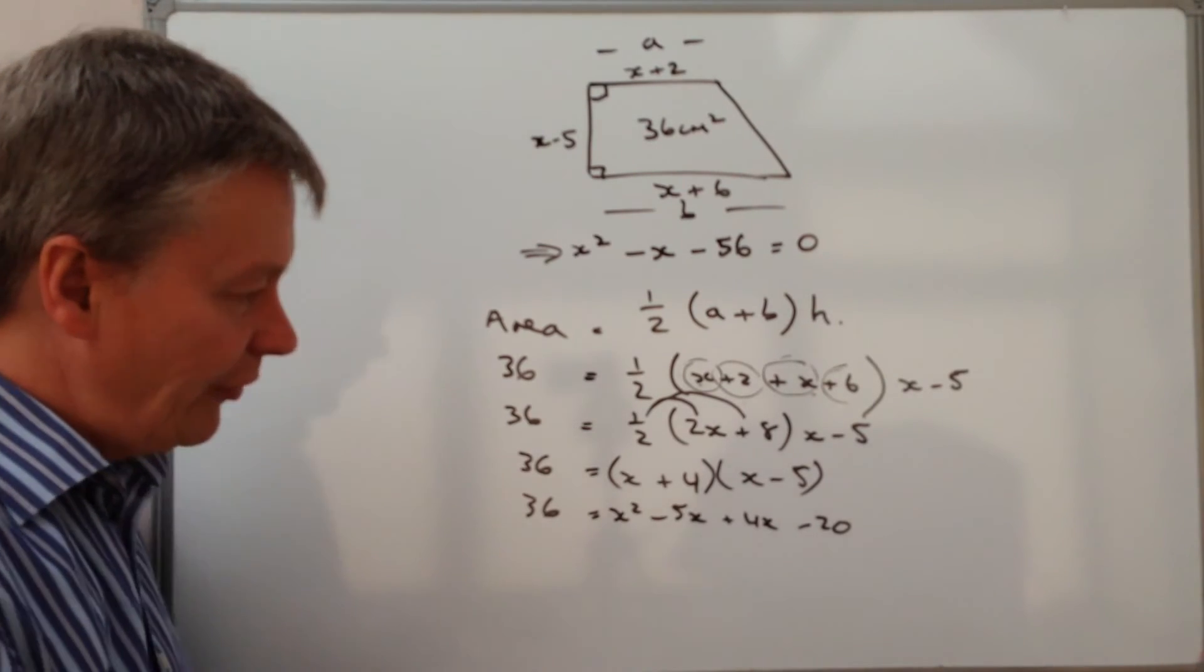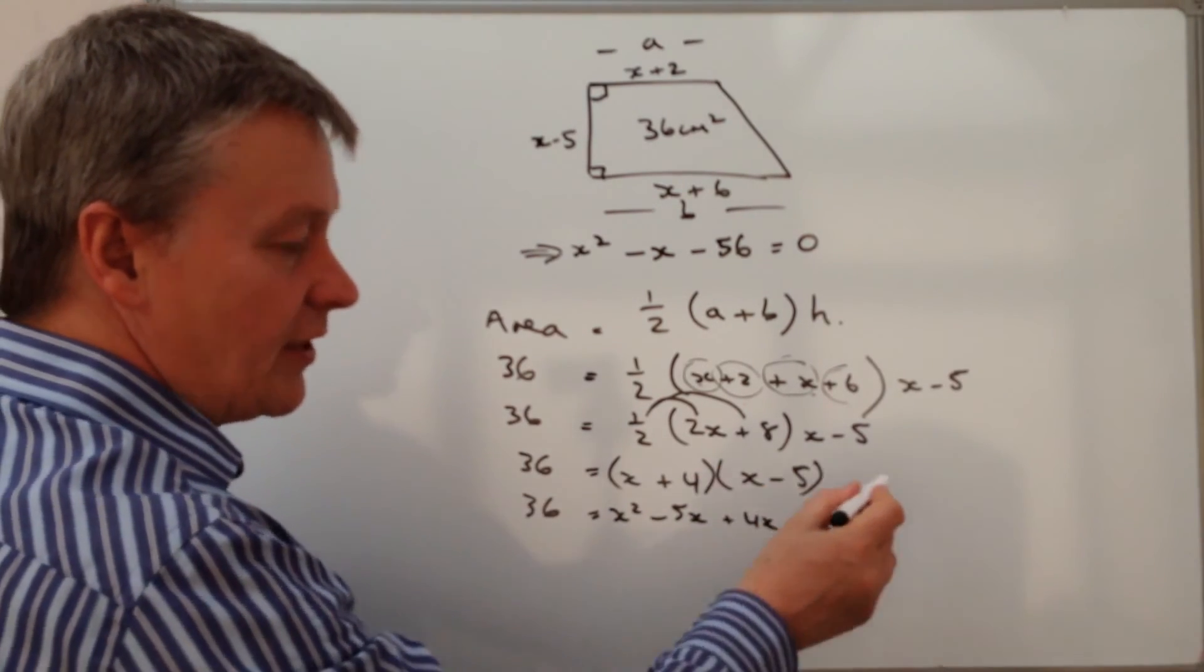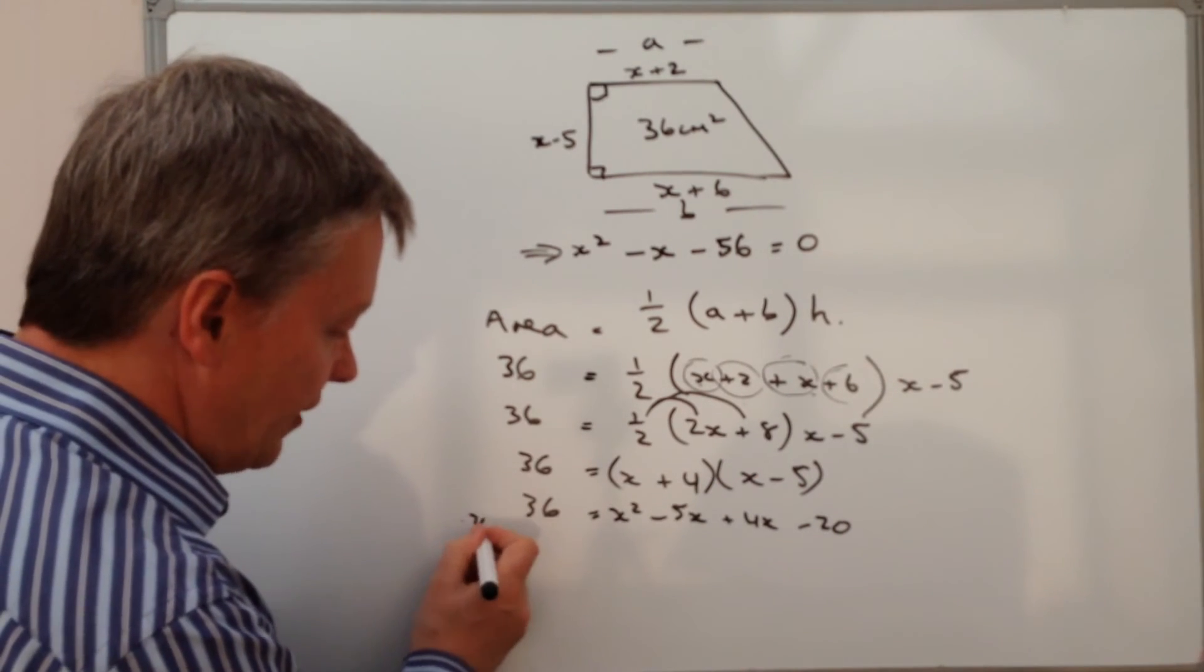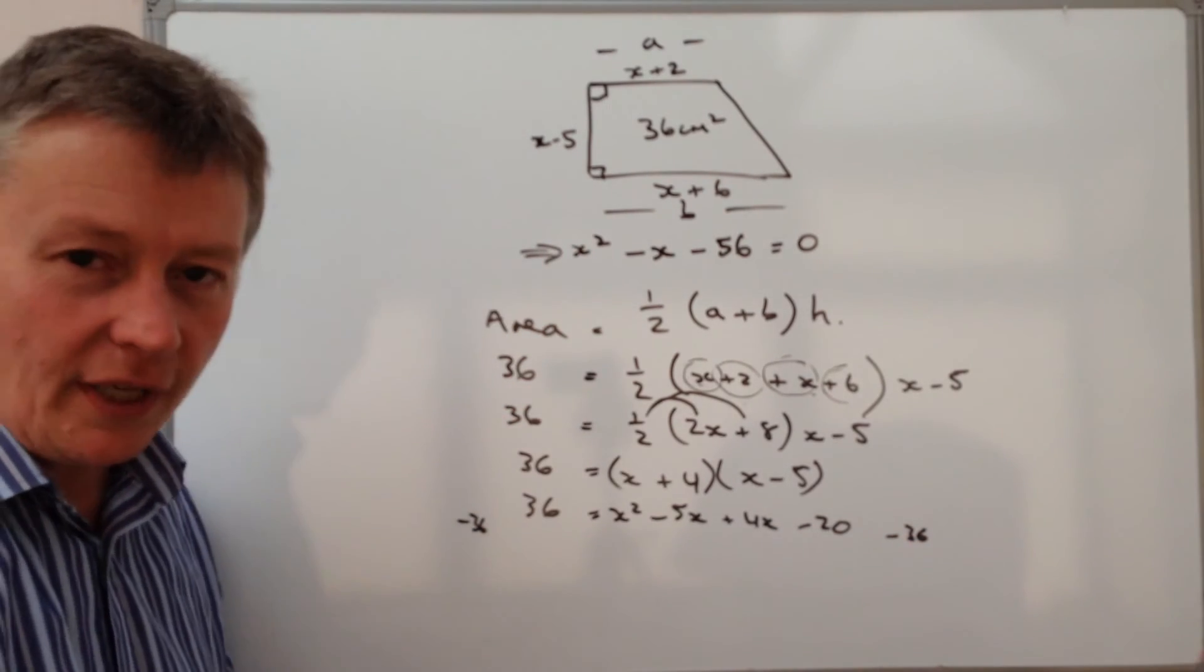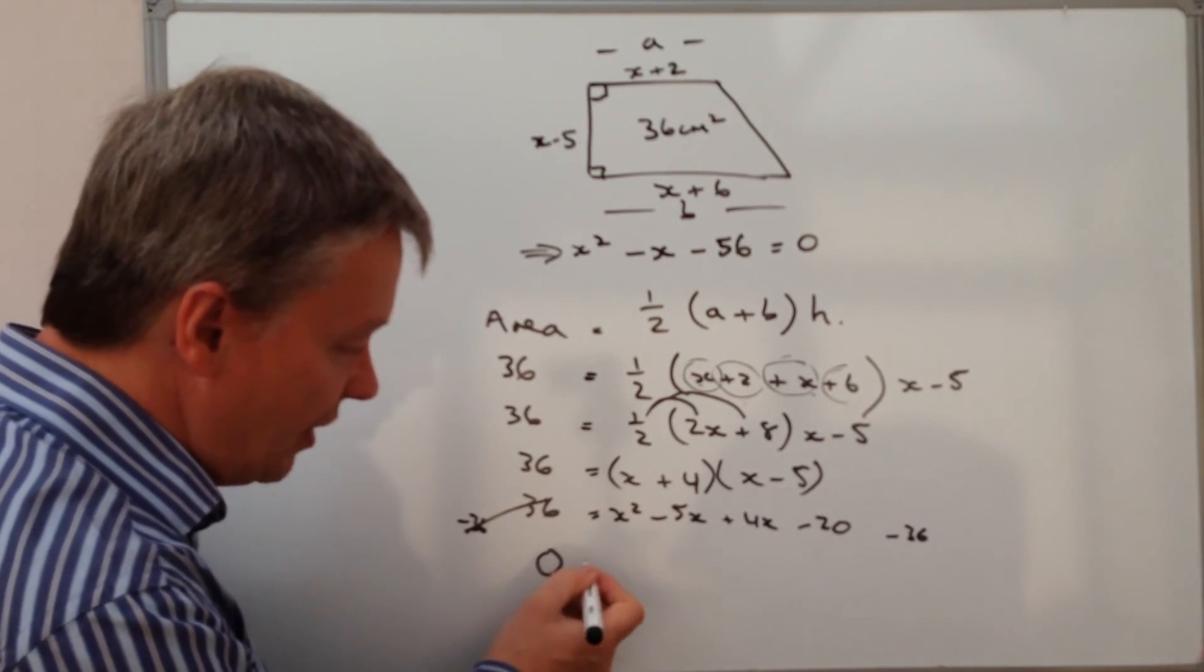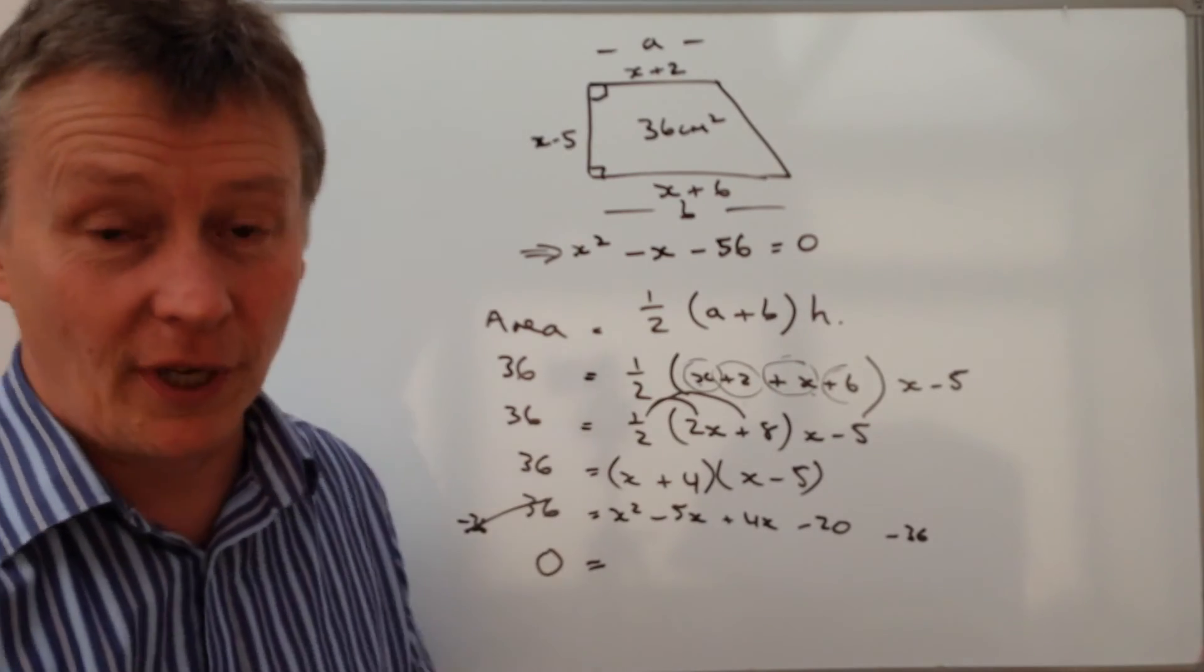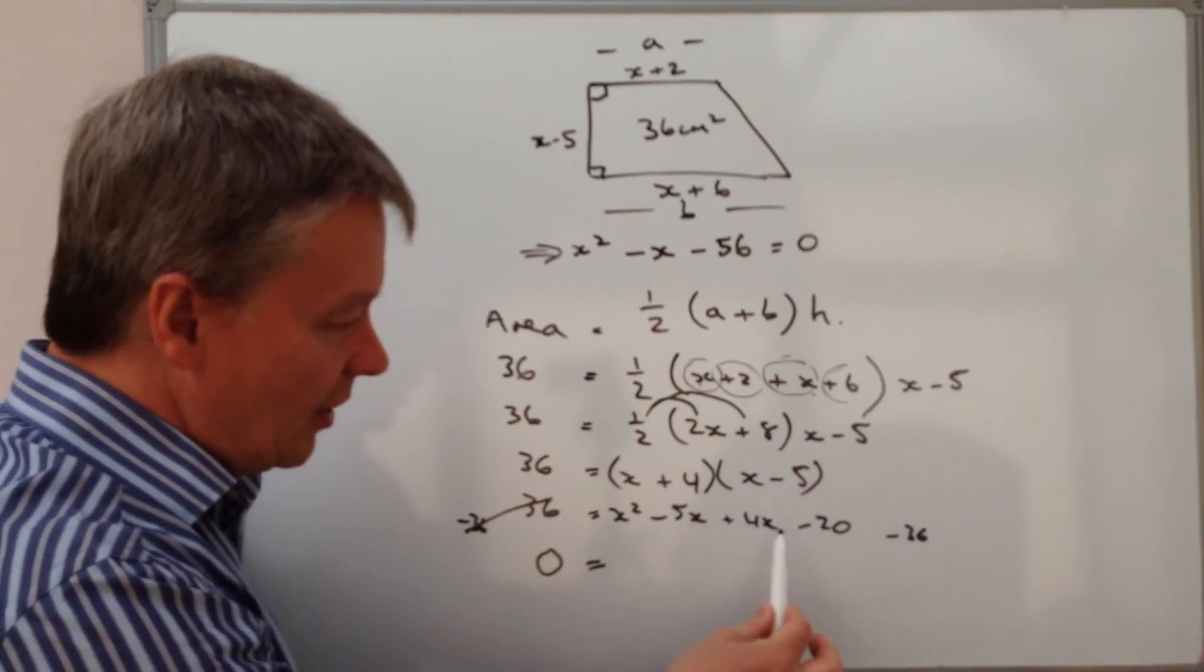So let's just tidy that up a little bit. The first thing I'm going to do is bring this 36 over to this side. The way I would do that is I would minus 36 from both sides. If I minus 36 from both sides, this side then becomes zero. So zero equals, well that's great because that's what I want from the question.